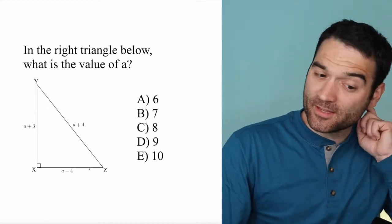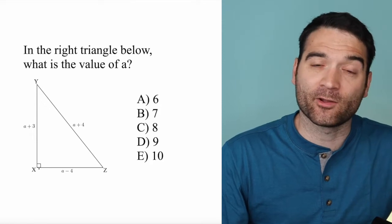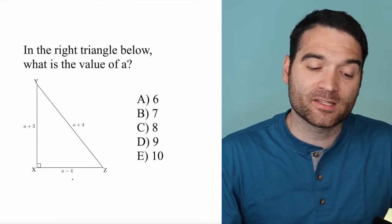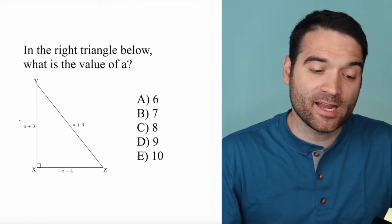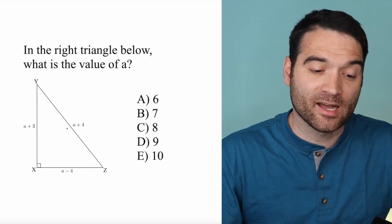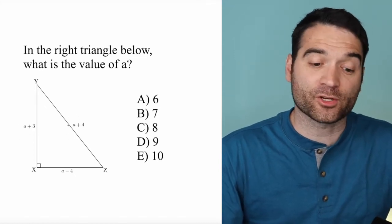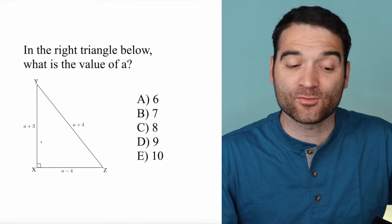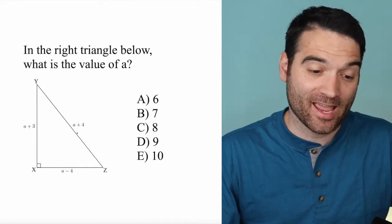We're told this is a right triangle. We have our 90-degree angle right there, and we've got three sides: XZ, XY, and YZ. Each of these is expressed in terms of a: a minus 4, a plus 3, and a plus 4.